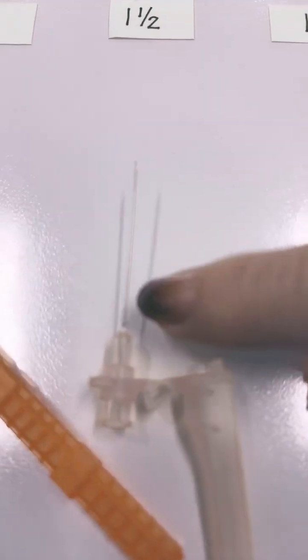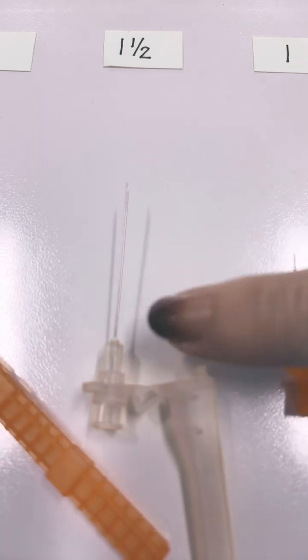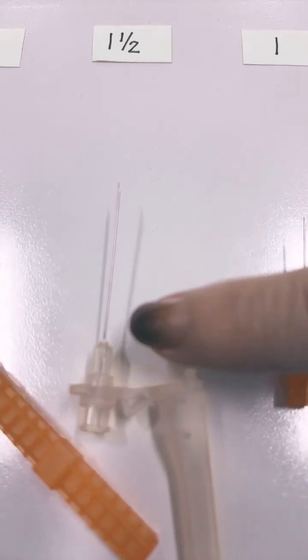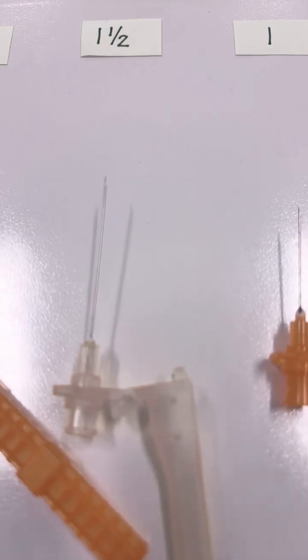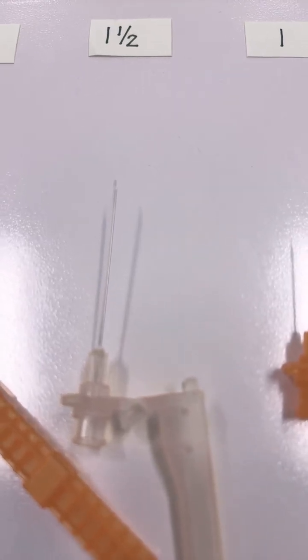Then we move to our 1 1/2 inch length. This one's a lot longer. This is one that would be commonly used for the ventral gluteal injections in the hip for intramuscular.